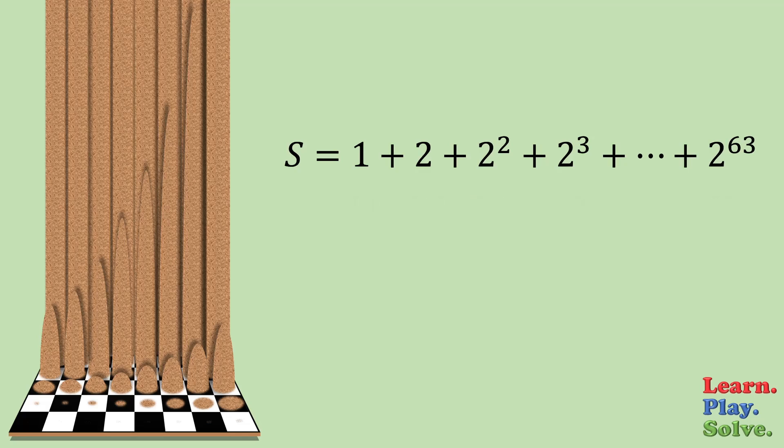Now we could sit here and plug 64 different expressions into a calculator and add them all up. But there's a neat way we can get the answer much quicker. First, we take this equation and double both sides. So the left side becomes 2S. And if we multiply everything on the right by two, it'll simply raise the power of every term.